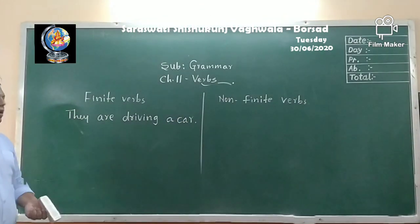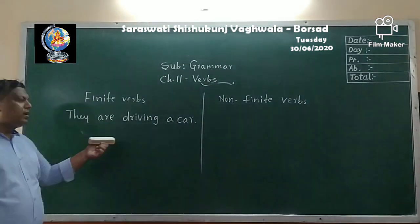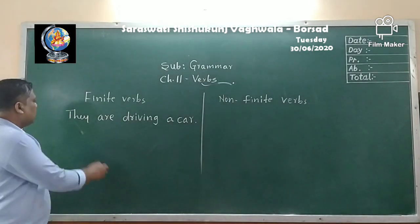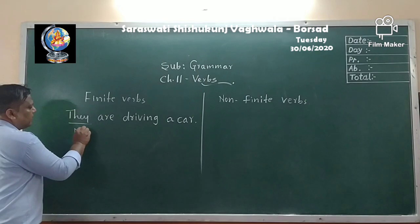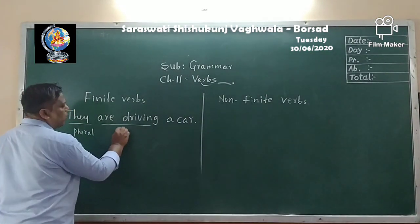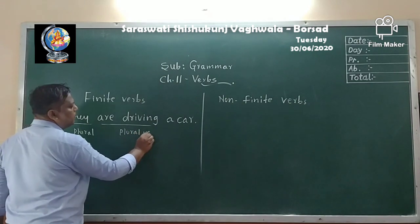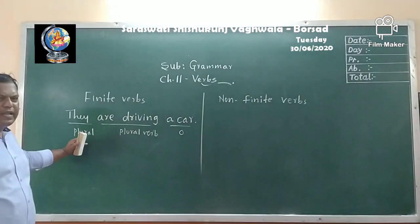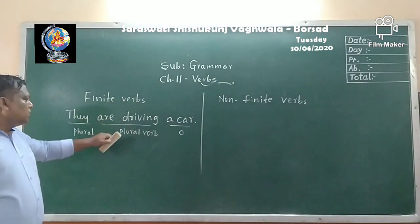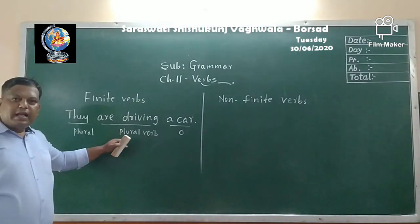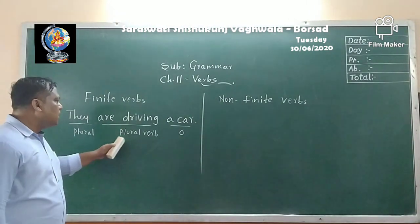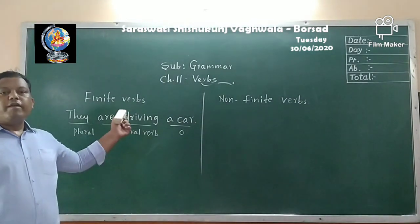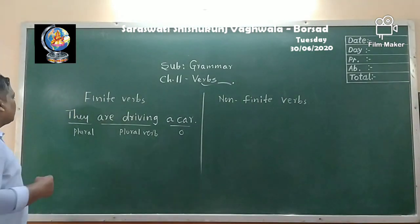Let us take another example: 'They are driving a car.' Here the subject is plural, so the verb is also plural. You can see there is an action and a tense in the sentence — present continuous tense. Therefore, this also becomes a finite verb.